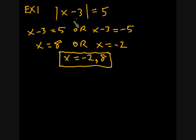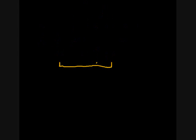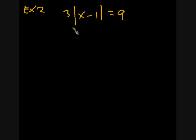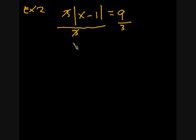Let's see what happens if we have a number times an absolute value. One might think that with a three out in front — and that does mean three times the absolute value of x minus one — we should distribute the three. But we do not want to distribute three times x and three times negative one. Instead, we're going to isolate the absolute value by dividing the entire left-hand side by three and the entire right-hand side by three. The threes cancel, and we're left with the absolute value of x minus one equals three.